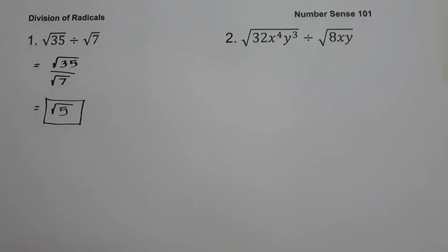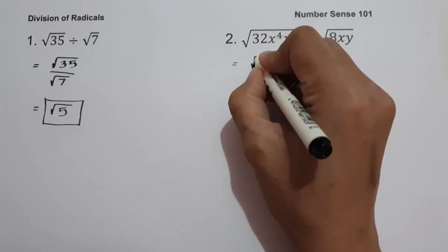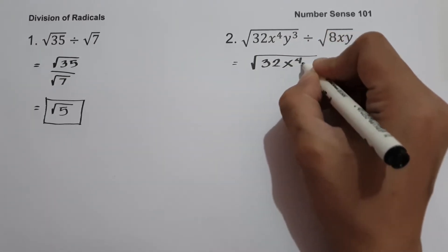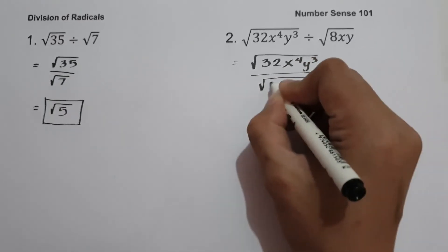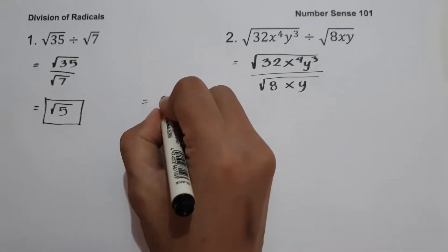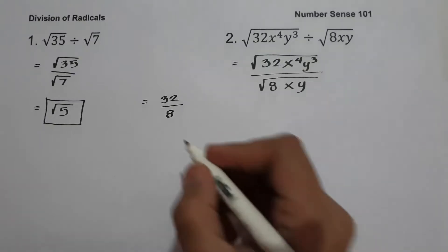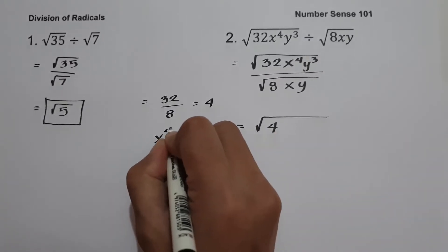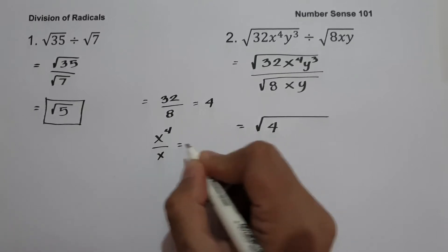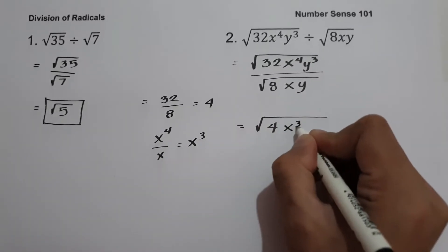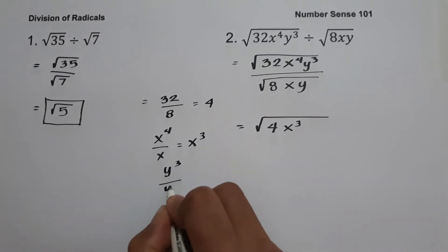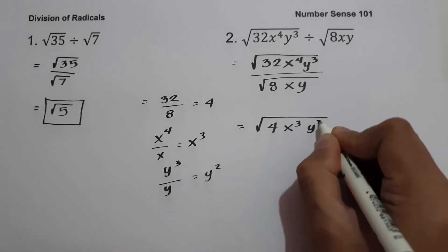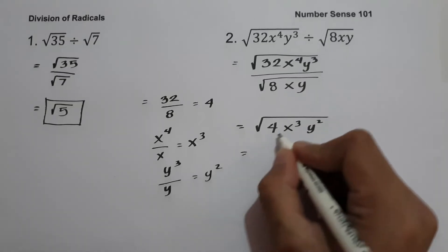On example number two, we have square root of 32x raised to 4, y raised to 3, divided by square root of 8xy. We have the same index, so let us rewrite this in fraction form. 32 divided by 8 gives us 4, so we have square root of 4. Then x raised to 4 divided by x — subtracting the exponents gives x cubed. And y cubed divided by y gives y squared.